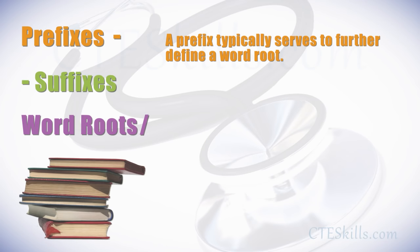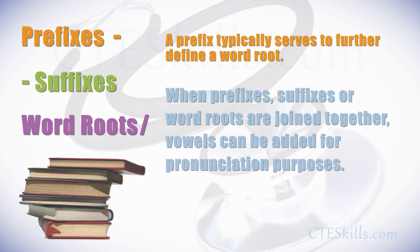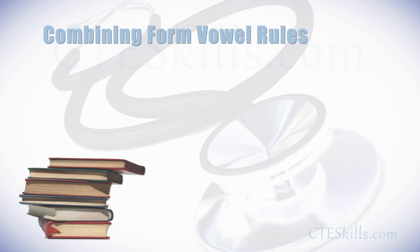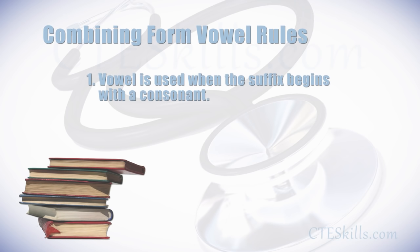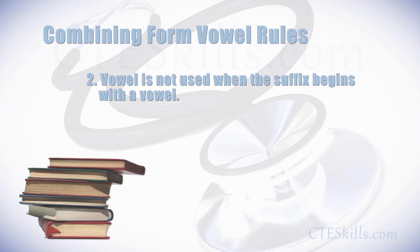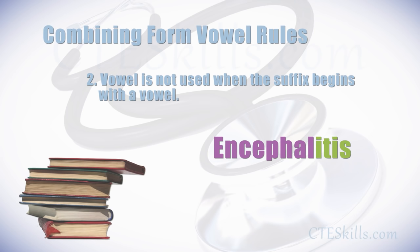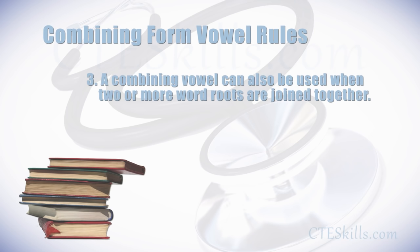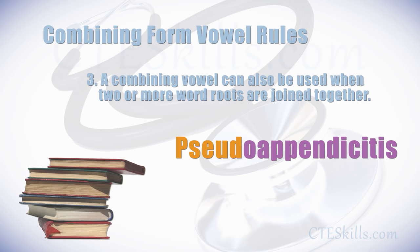The prefix typically serves to further define a word root. When prefixes, suffixes, or word roots are joined together, vowels can be added for pronunciation purposes — this is called combining form vowels. The general rules are: a combining vowel is used when the suffix begins with a consonant, as with the word 'encephalogram'; a combining vowel is not used when the suffix begins with a vowel, as in 'encephalitis'; and a combining vowel can also be used when two or more word roots are joined together, such as with pseudo-appendicitis.